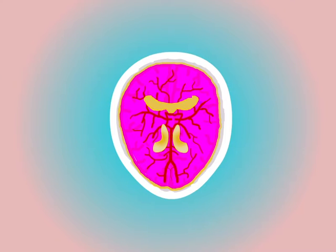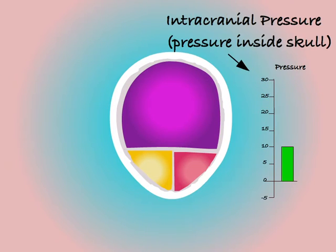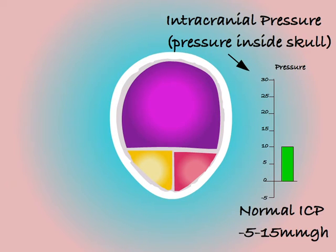Using animation software we can divide them into their separate components to make them easier to study. These three components are all packed inside the skull, and because they're packed in fairly tightly they're always under a certain amount of pressure. This bar shows the pressure inside the skull. Normal pressure inside the brain is somewhere between 5–15 mmHg. This level of pressure is safe and does not cause any damage.